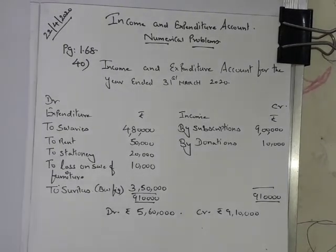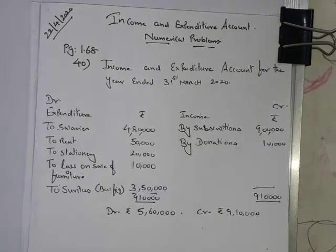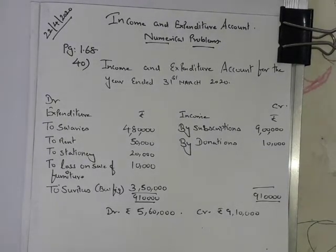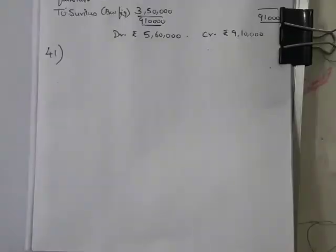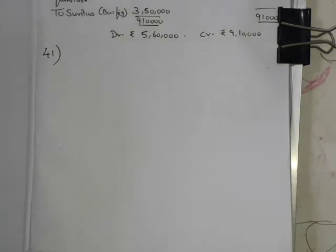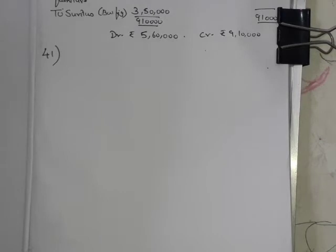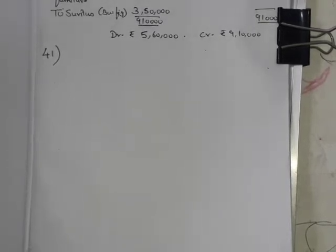Now let's try problem number 41. In problem 41 you are again given a receipts and payments account for the year ended 31st March 2020. What is special in this problem is that you have been given some adjustments below your receipts and payments account relating to donations, medicine purchased, and government grants.